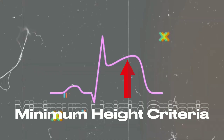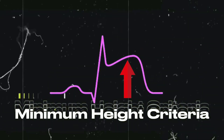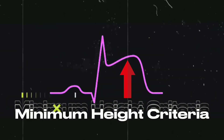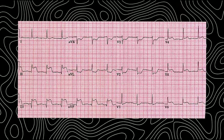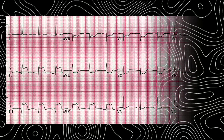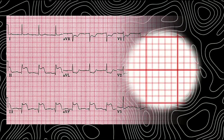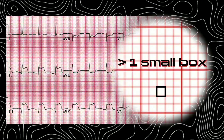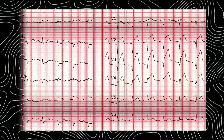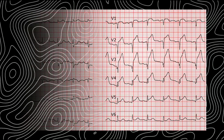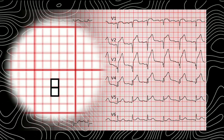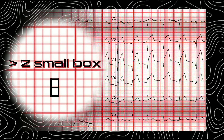There is a minimum height criteria for the ST segment to be called ST elevation. When there is ST elevation in limb leads, the minimum height of the ST segment should be more than one small box. And when there is ST elevation in chest leads, the minimum height of ST elevation should be more than two small boxes.